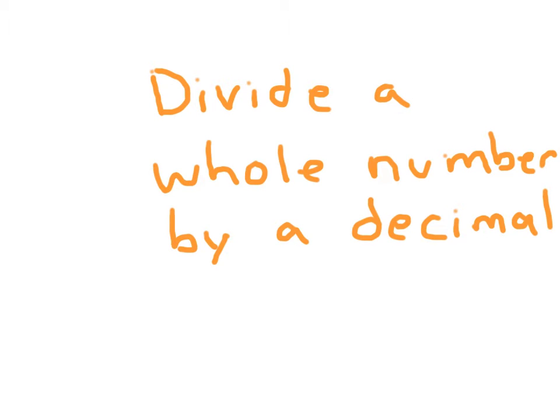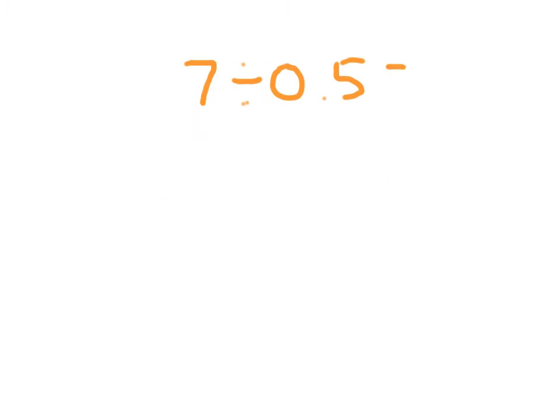Let's learn about dividing a whole number by a decimal. I might be given the problem 7 divided by 0.5 — that's a whole number divided by a decimal number.